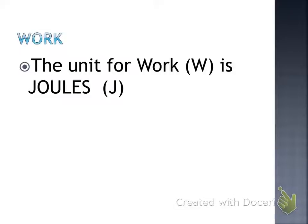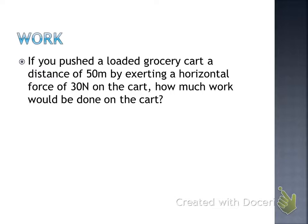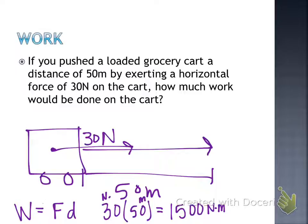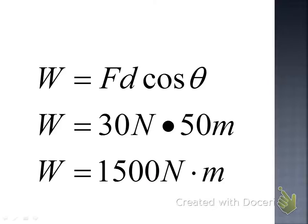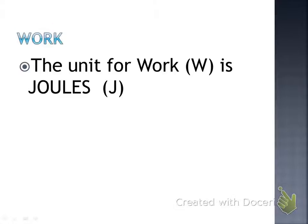The unit for work — a newton meter — is called a joule, labeled with a capital J. One joule equals one newton meter. Joules is an energy unit, a heat unit, a work unit — it's used for lots of different things, and it's what we'll use for work.